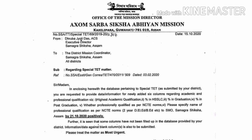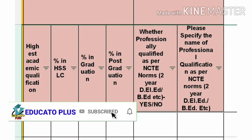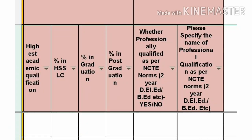This format — the highest academic qualification: the number is in SLC, the higher secondary is the number as percent, in graduation, and if graduation is not there, post graduation — that is the qualification.